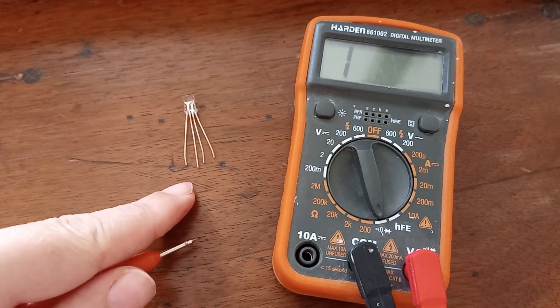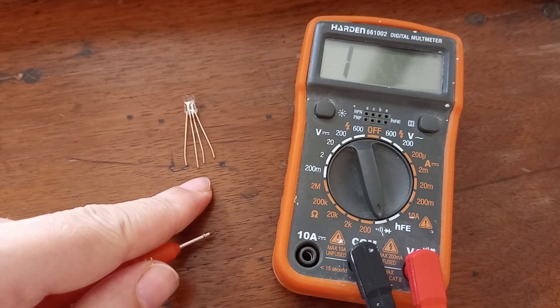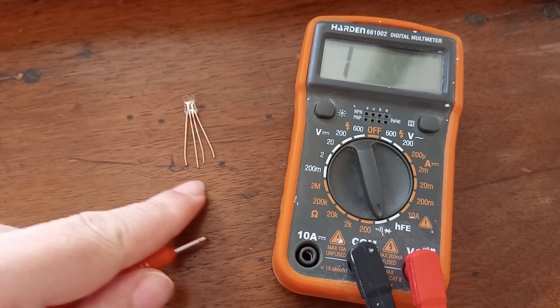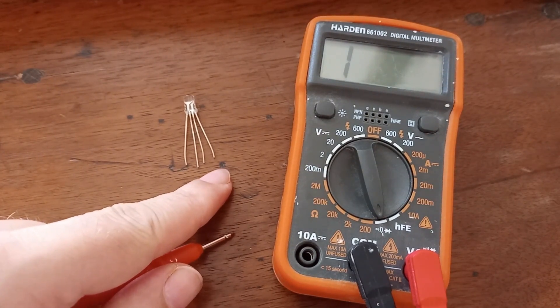And this particular RGB diode has four legs. Second leg is joint pin, first leg is red pin, third one is green and fourth one is blue.